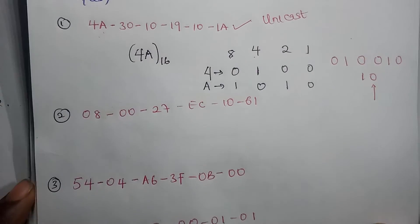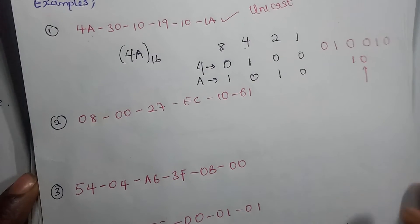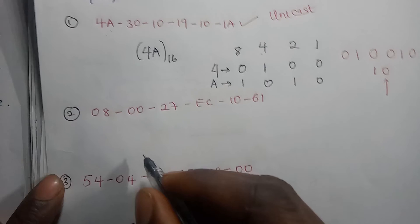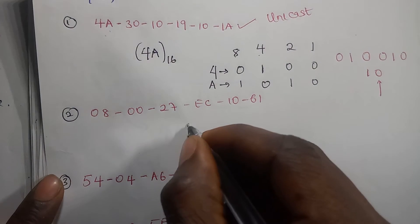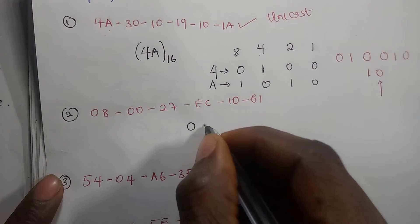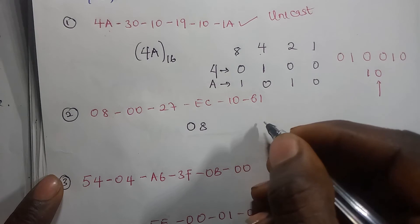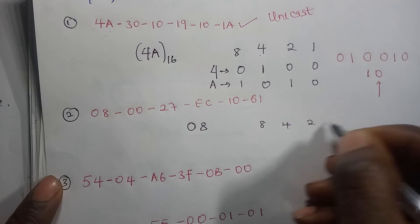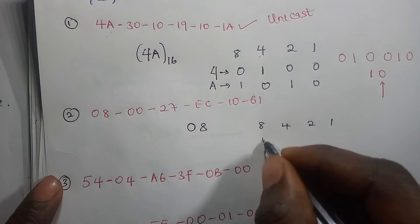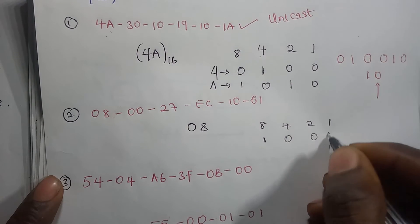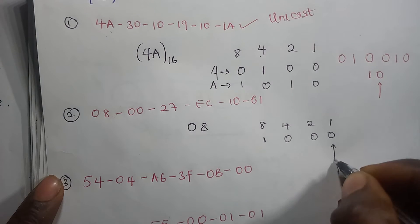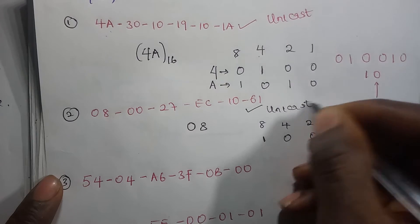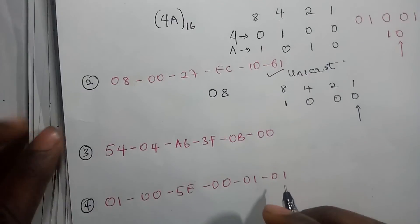Let's see another example. The next one is actually 0, 8. You can just see — we pick it up as 8, 4, 2, 1. So we turn the 8 on, making the rest 0. As you can see, the last digit here is 0. It means this one is also unicast.